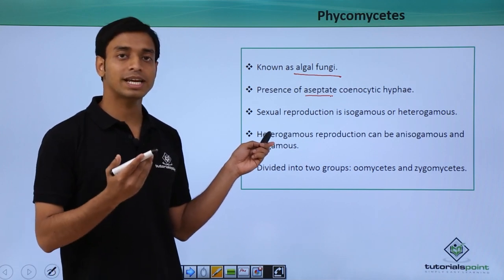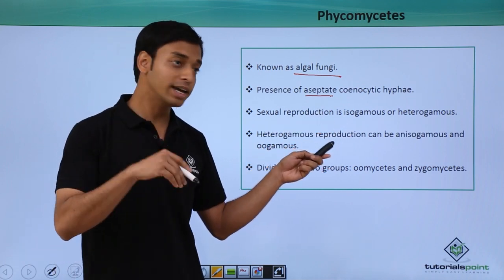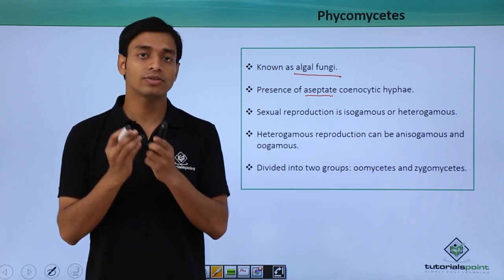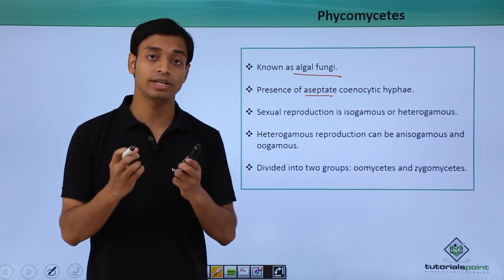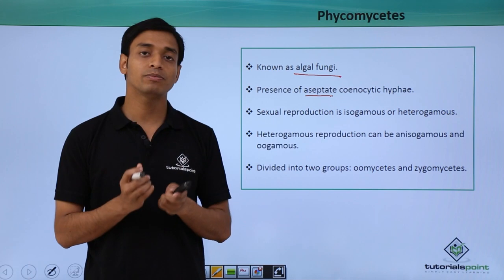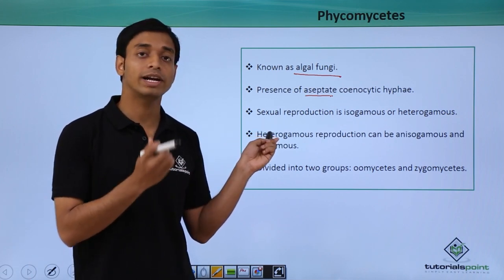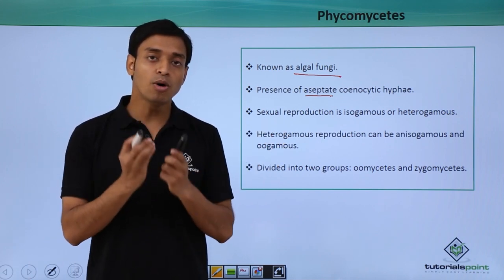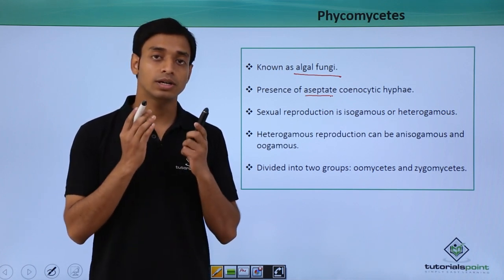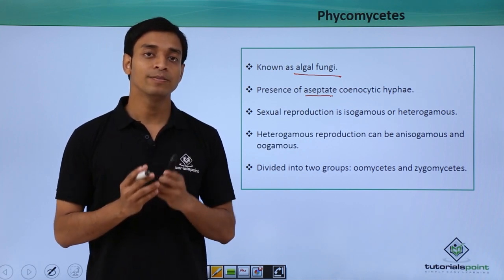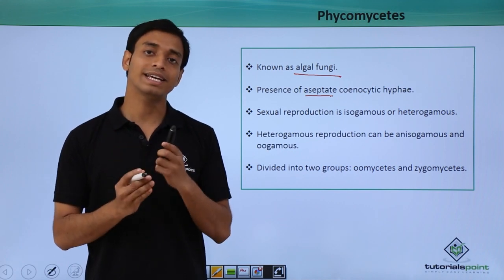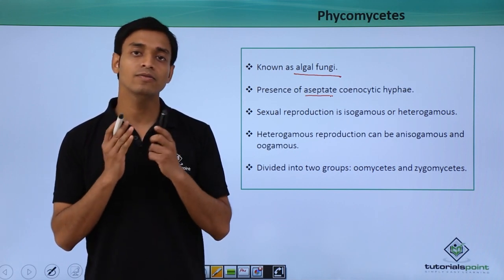The heterogamous type of sexual reproduction can again be anisogamous, which means the two types of gametes are absolutely different. Or they can also be oogamous. In oogamous sexual reproduction, a small motile male gamete fertilizes with a larger non-motile female gamete. The female gamete is larger and cannot move, whereas the male gametes are smaller and motile.